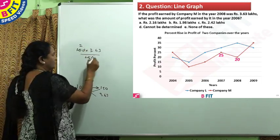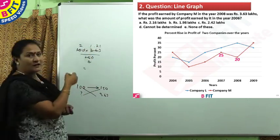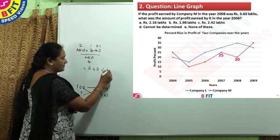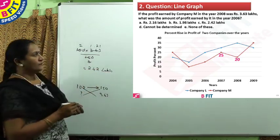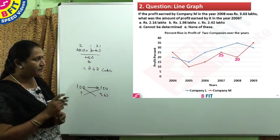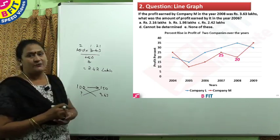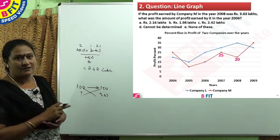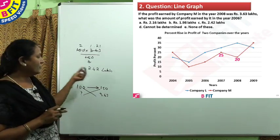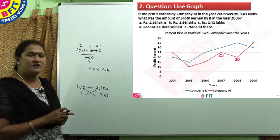Multiplying 3.63 × (100/150) gives us: 1.21 × 2, which equals 2.42 lakhs. So the profit in the year 2006 was 2.42 lakhs. After the increase of 25% in 2007 and 20% in 2008, the value comes out to 3.63, confirming our answer. The answer is 2.42 lakhs — Option C.